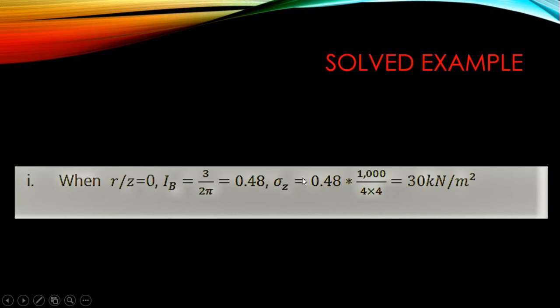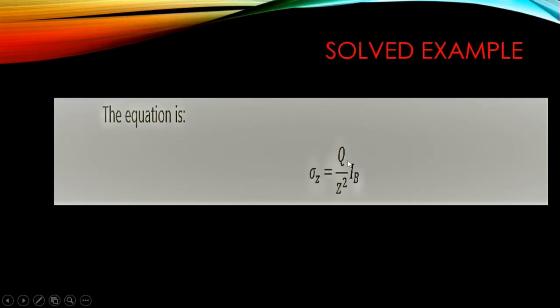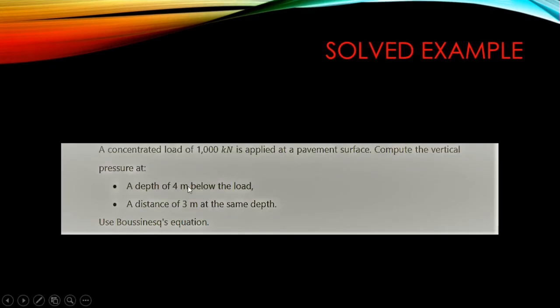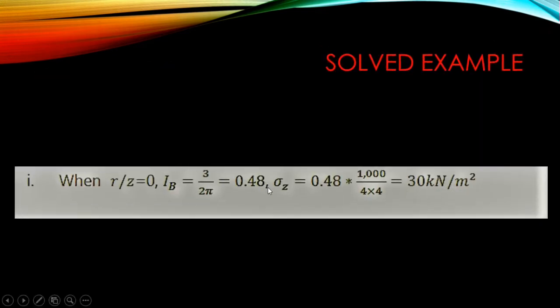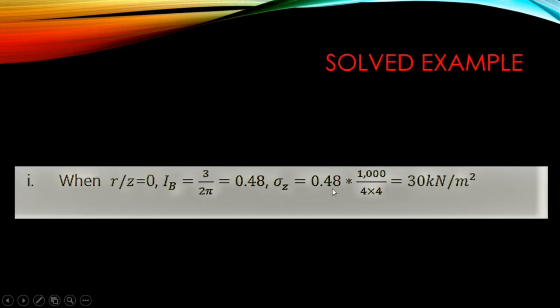So Ib equals 3 over 2π, which gives 0.48. To calculate the vertical pressure: sigma = (q / c²) × Ib. Substituting the values — q = 1000 kN, c = 4 meters, and Ib = 0.48 — the vertical pressure equals 0.48 multiplied by 1000, divided by four squared, giving a vertical pressure of 30 kilonewtons per meter squared.